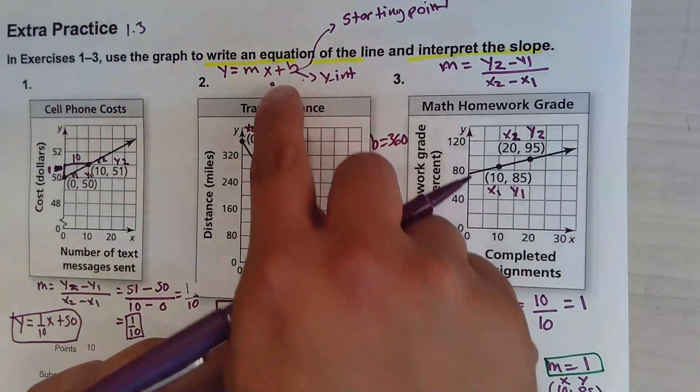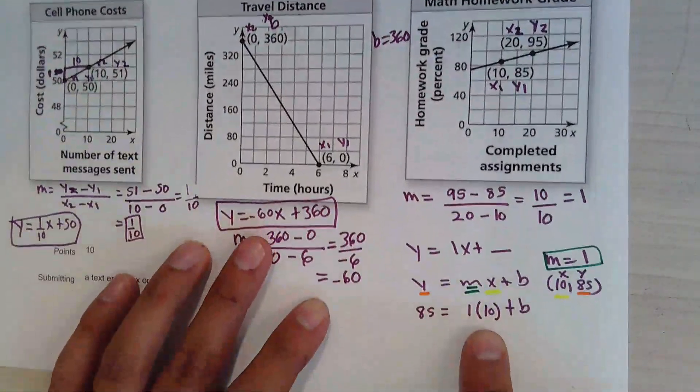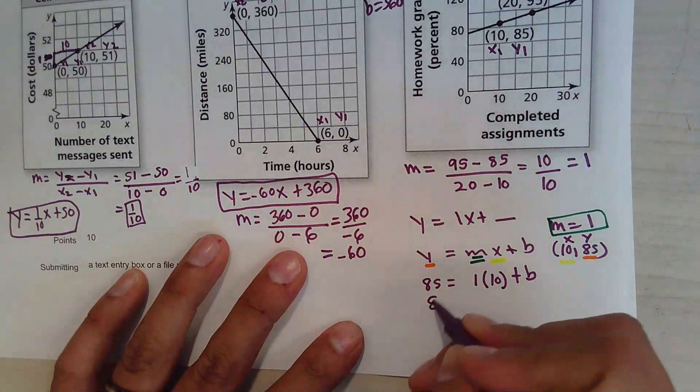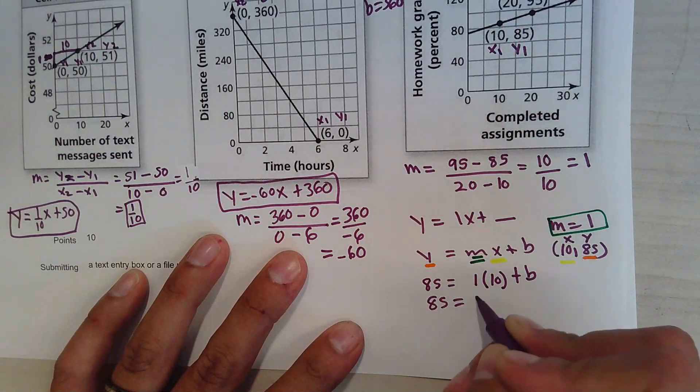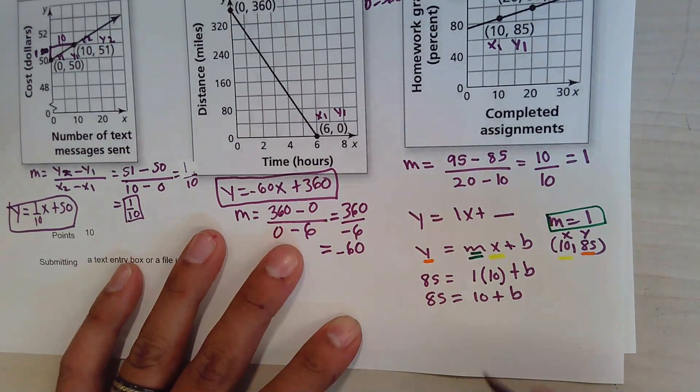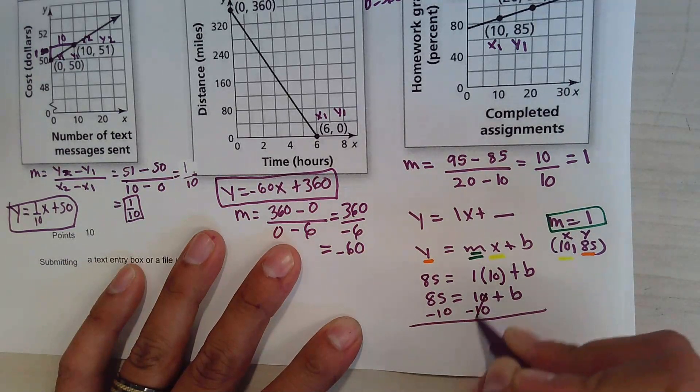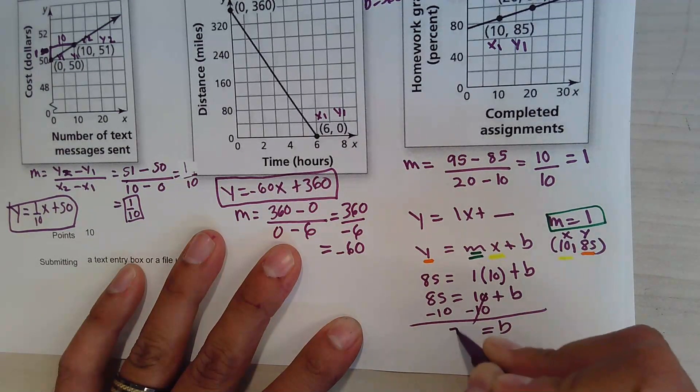b is the starting point. Now it's hard to guess, so instead we're going to do it this way. 85 equals 1 times 10 is 10, plus b. I can swap this if I want to, or I can just go from here. Minus 10, minus 10. b equals 75.